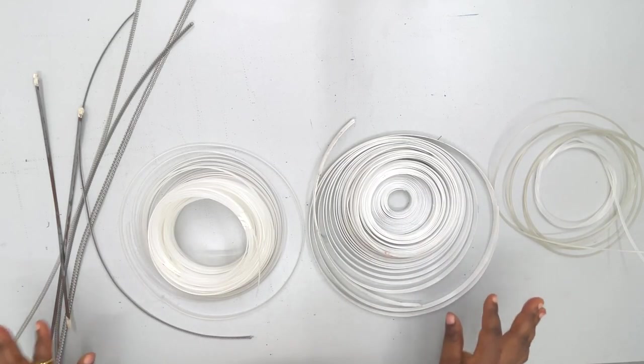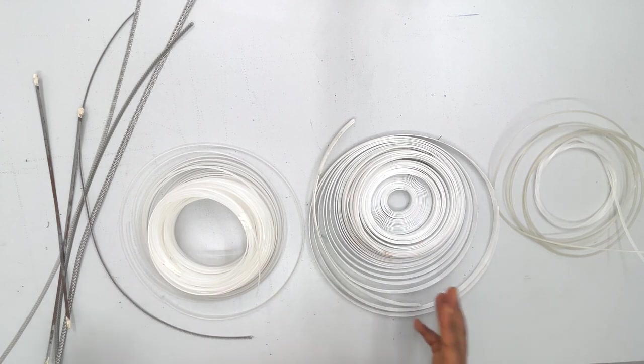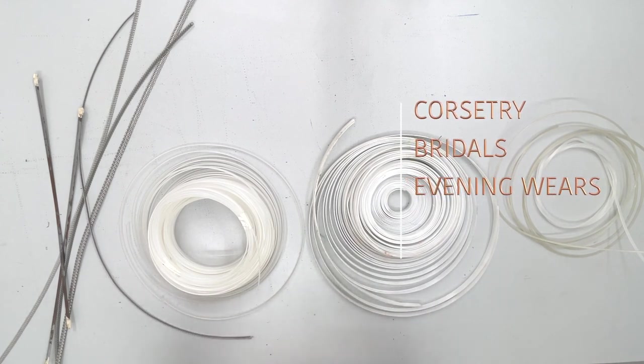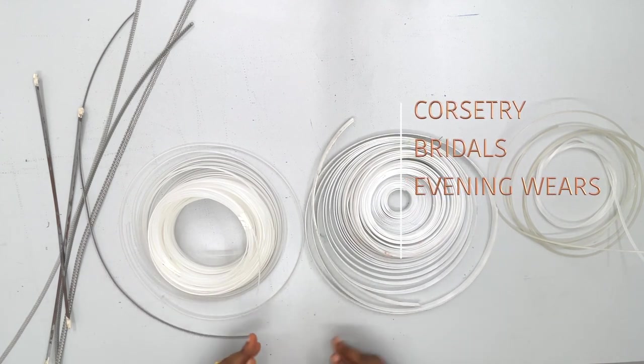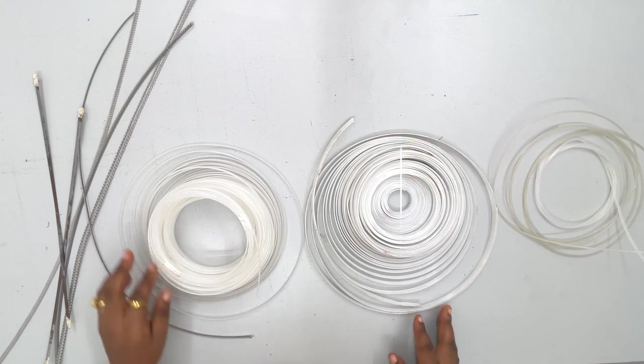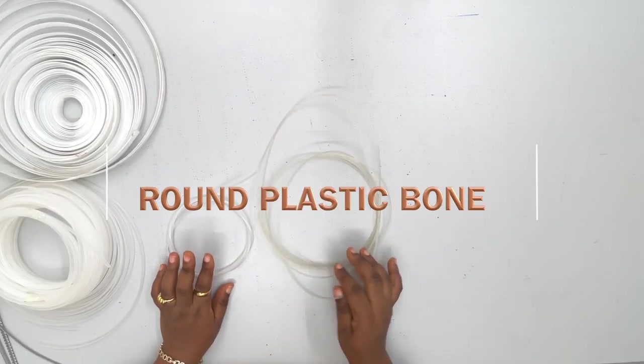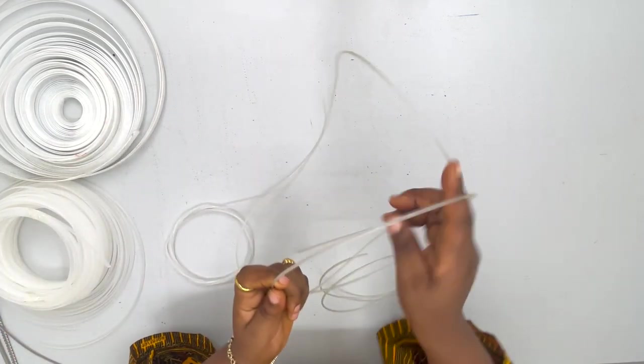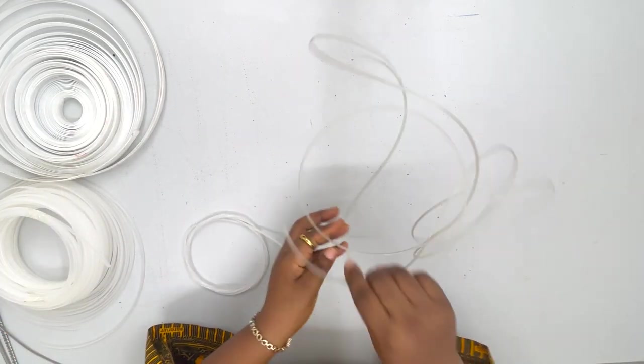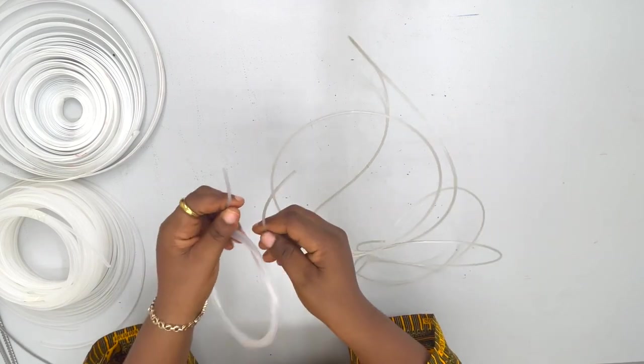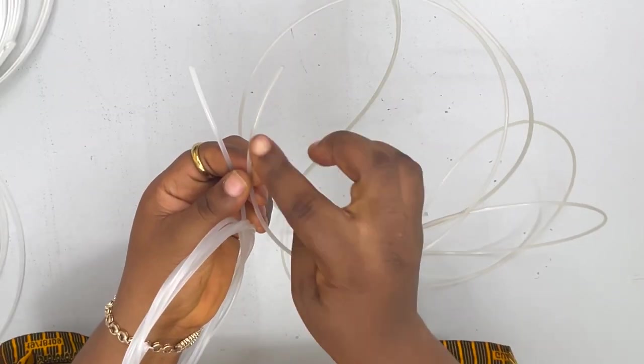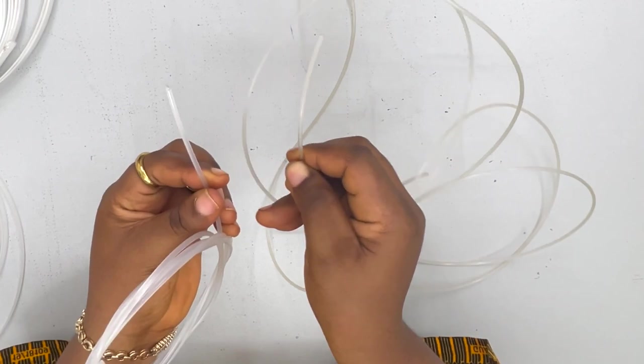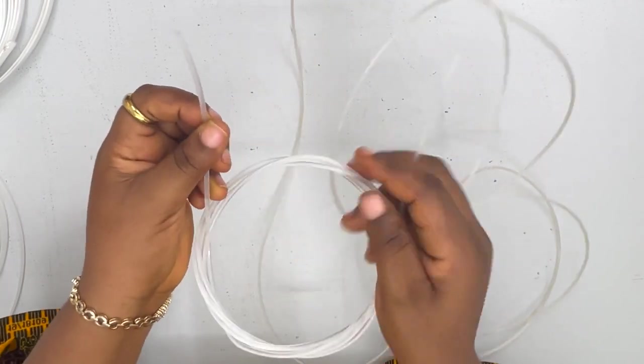Right here we have the different bonings that are usually used in corsetry, bridal wear designs and even evening dresses. The first bone we're going to talk about is the round plastic bone. So this round plastic bone comes in different widths. If you look closely, you can see that this width is smaller compared to this width.